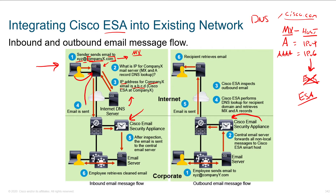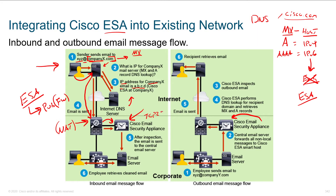The sending mail server is now trying to transfer that email. We point to a public IP address on our firewall. The firewall will have a NAT rule and an access control list: if you're trying to reach port 25 of this public IP, it NATs you into the ESA. On the ESA, we're listening on TCP port 25, so that email gets delivered into the ESA — and this is where the process begins.